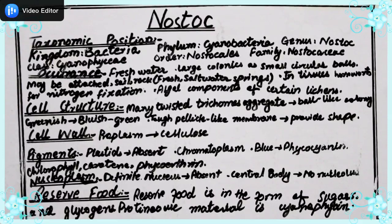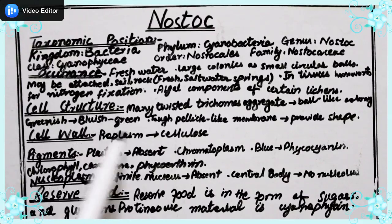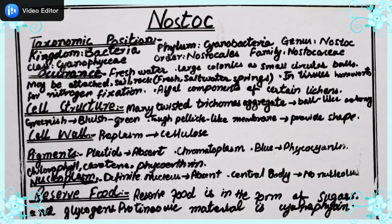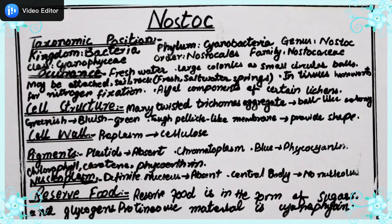Regarding cell wall composition: the cell wall is composed of cellulose. The protoplasm is surrounded by this wall composed of cellulose.